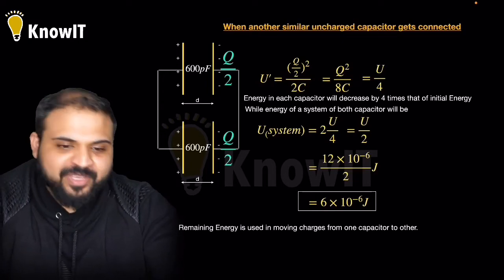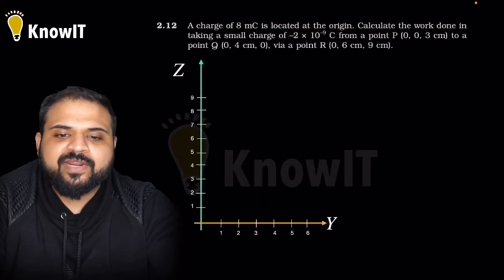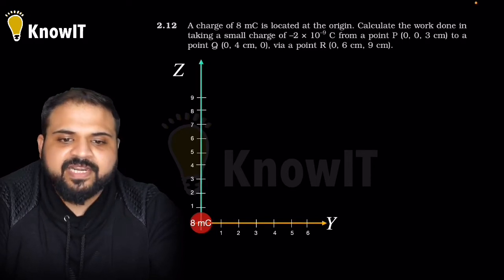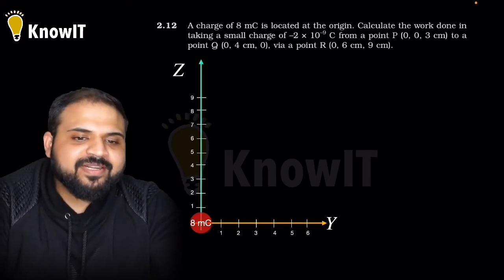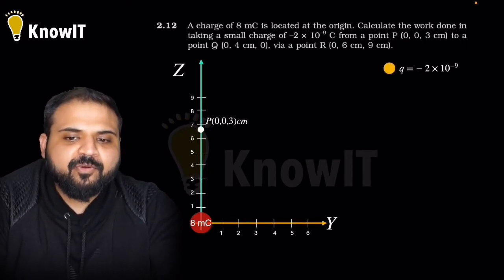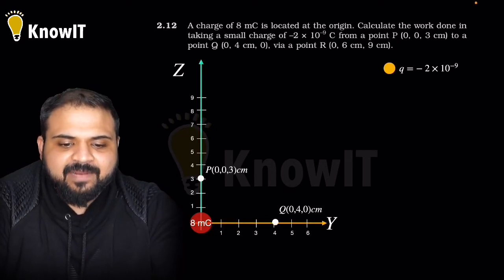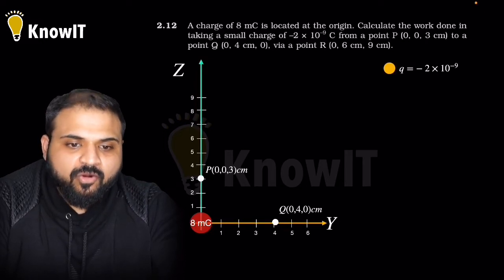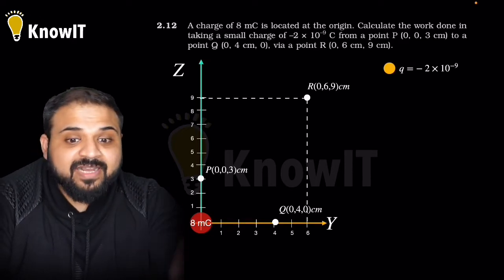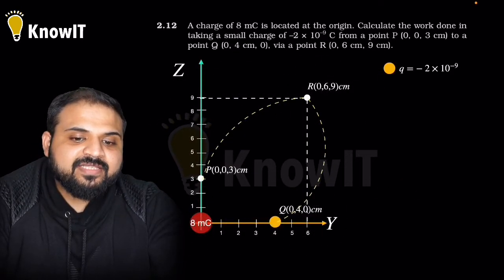I hope you understood this question. Moving on to the next question, 2.12. A charge of 8 millicoulomb is located at the origin. We have made a Cartesian coordinate system here with 8 millicoulomb charge at the origin. Now calculate the work done in taking a small charge of minus 2 into 10 power minus 9 coulomb from point P at (0, 0, 3 cm) to point Q at (0, 4, 0 cm), via a point R at (0, 6, 9 cm).